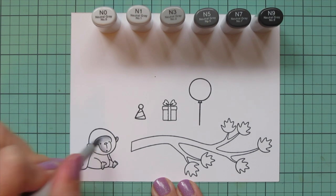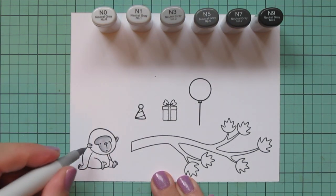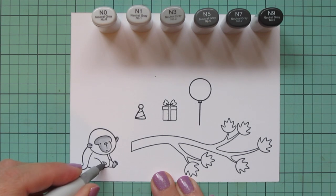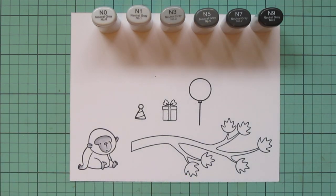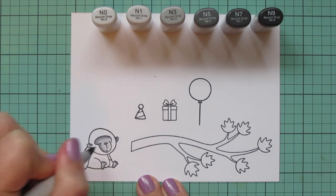So I started with the N3 and then I'm blending that out with the N1 and then I'll bring in the N0 for my highlight. But I like to have a bit more contrast in my coloring so I am going to do a second layer with those shades.